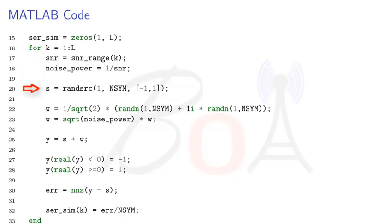Here we compute the noise power given that average symbol energy is equal to 1. Next, we generate a row vector of 1 million BPSK symbols using the MATLAB RANDSRC command as discussed earlier. Here we generate a zero mean complex Gaussian noise vector with noise power equal to 1 by SNR. If you don't know how to generate a complex Gaussian noise with a specific mean and variance, then we strongly recommend you to watch our previous video on this topic, whose link is provided in the description.